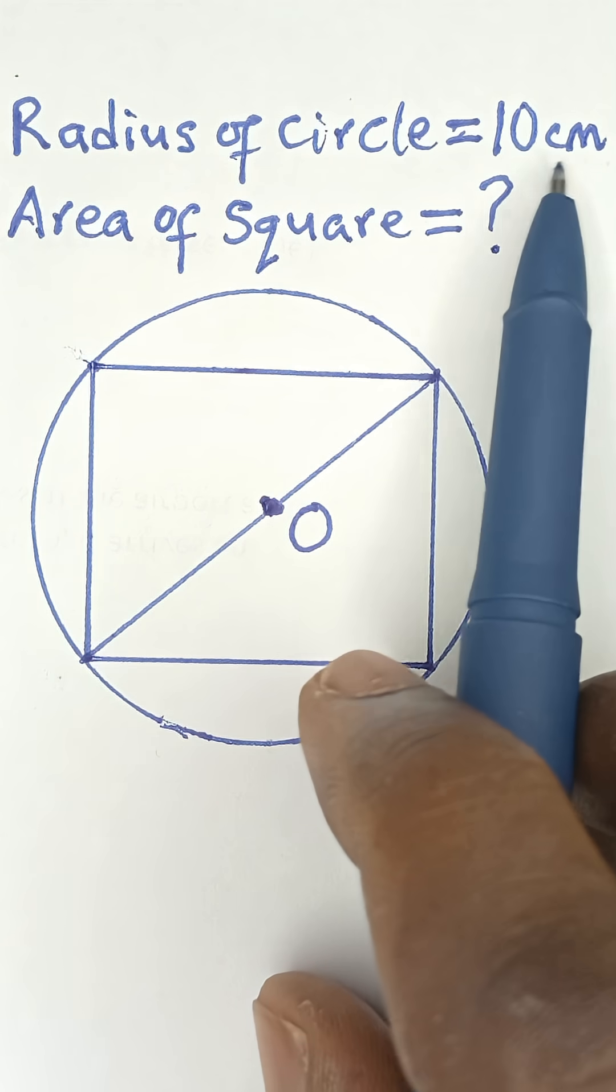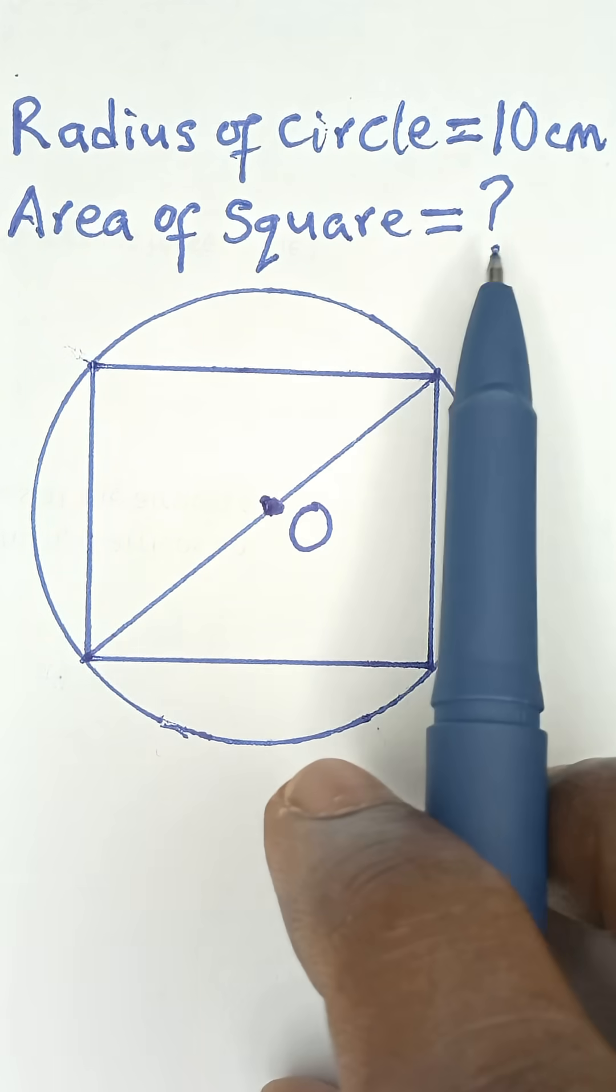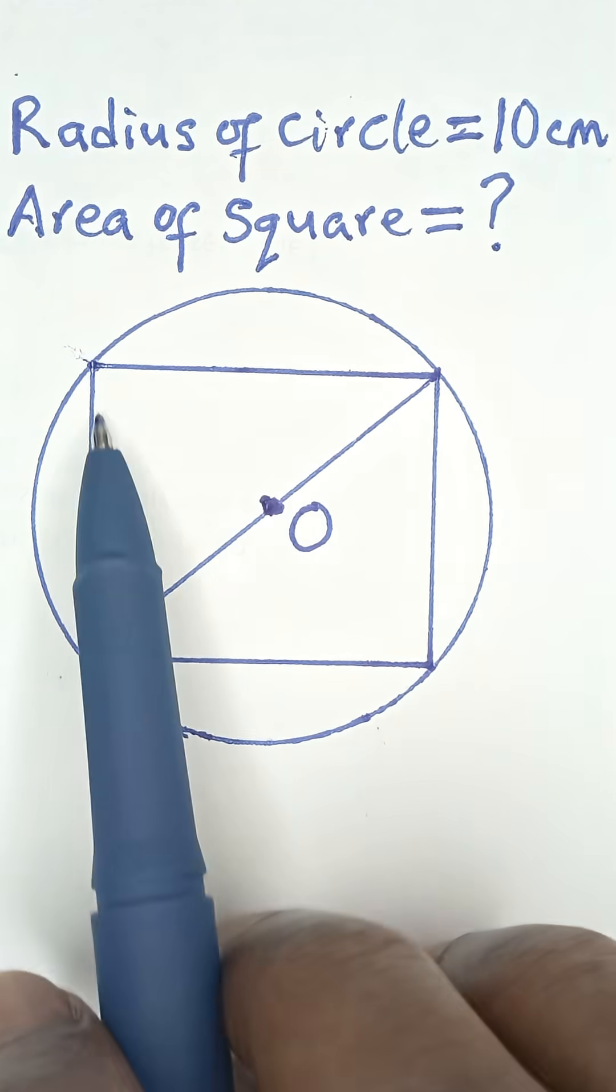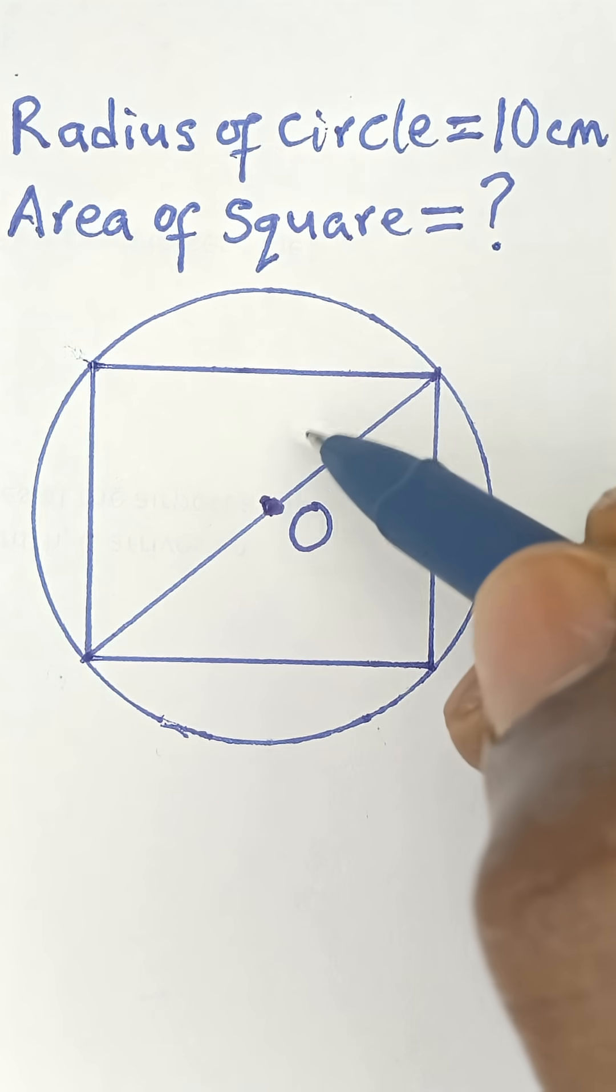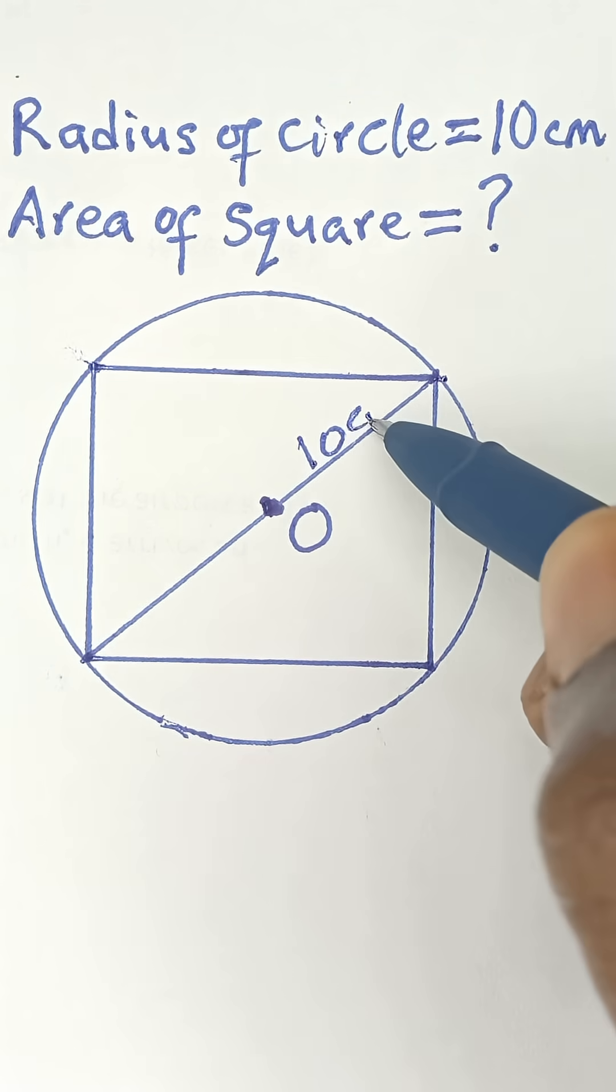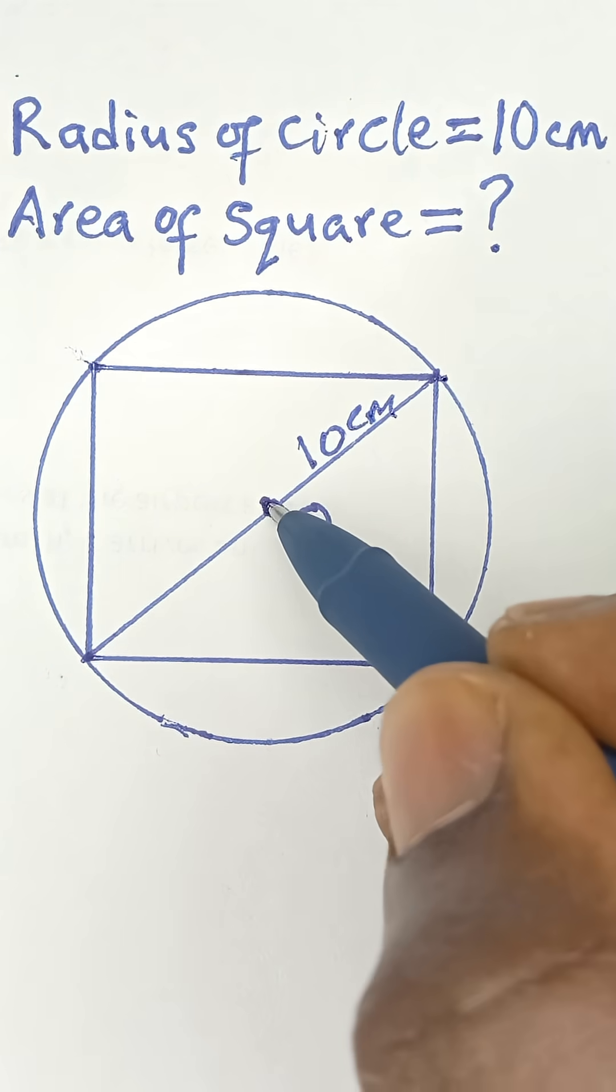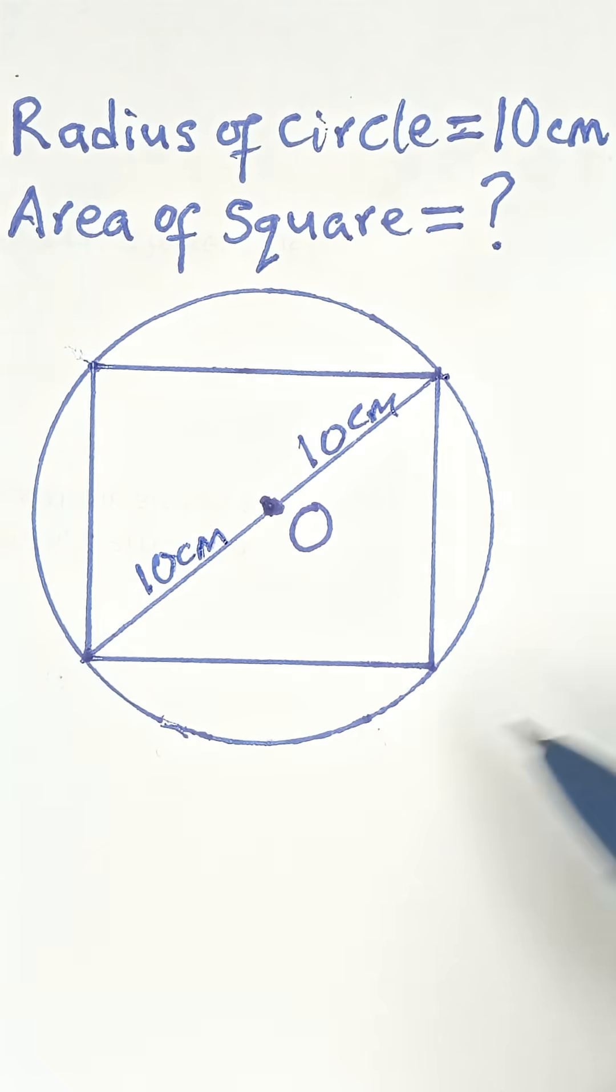Radius of circle is equal to 10 centimeters. Area of square is equal to question mark. So now we have this circle and the radius is given to us as 10. Don't forget, the radius is from the center to the circumference. So the radius is 10 centimeters, and also from center to circumference the radius is 10 centimeters.